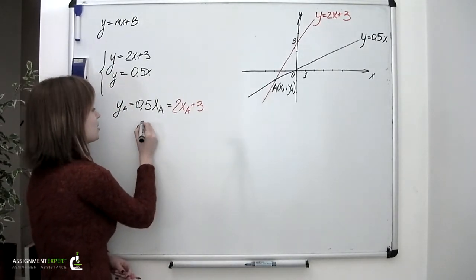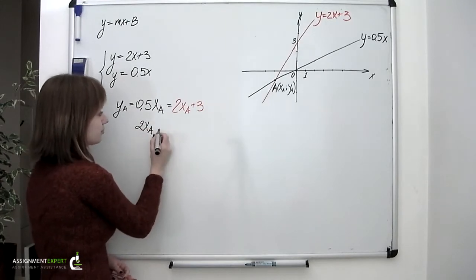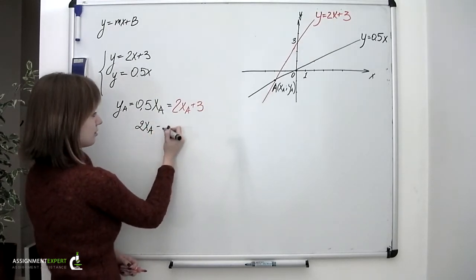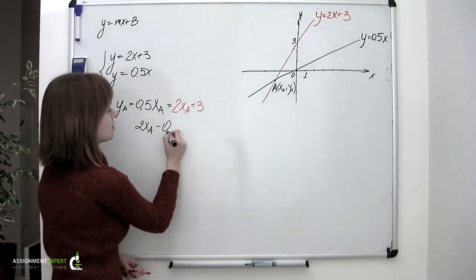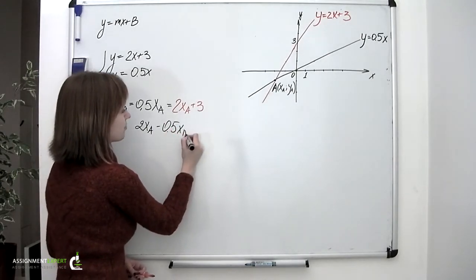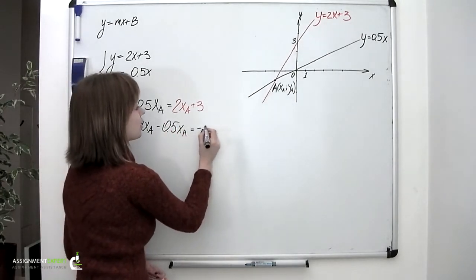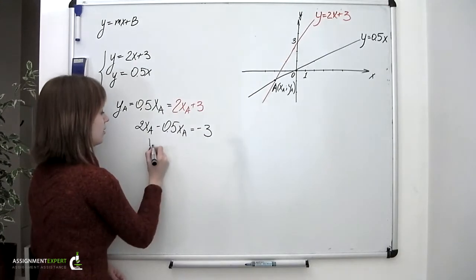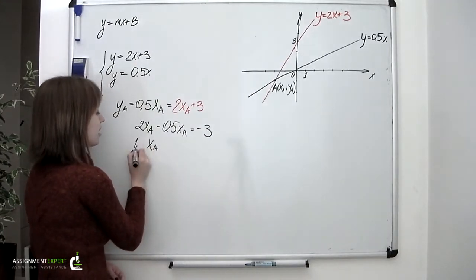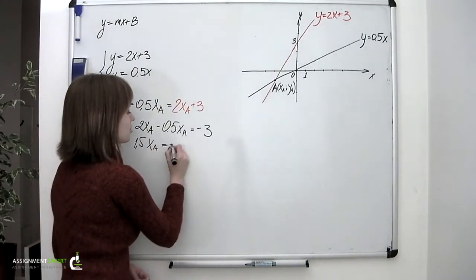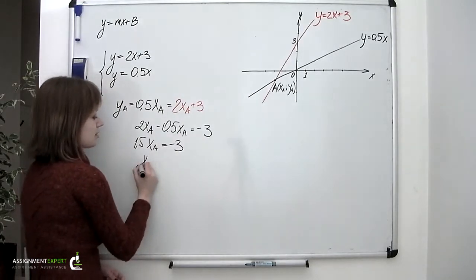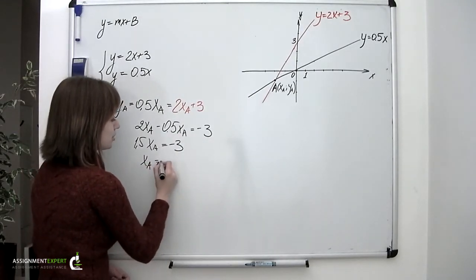So we'll go like this: 2x minus 0.5x equals negative 3. 1.5x equals negative 3 and x equals negative 2.